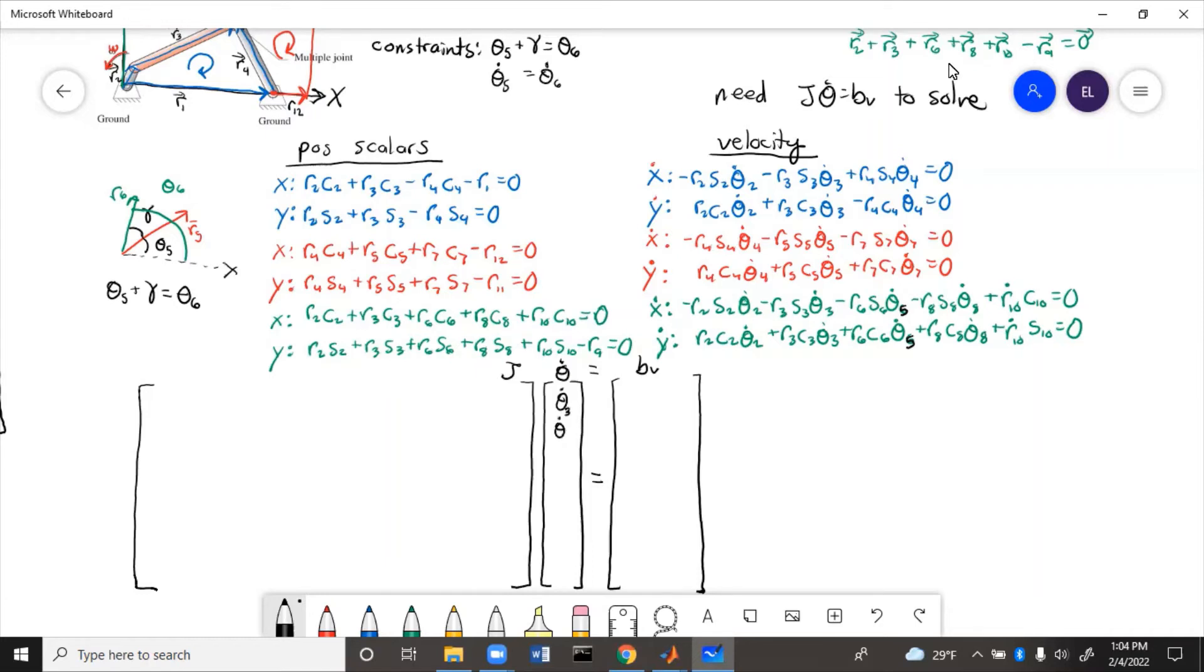theta 4 dot, theta 5 dot, and remember theta 5 dot and theta 6 dot are the same. So then we'll have theta 7 dot, theta 8 dot, and r10 dot.